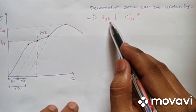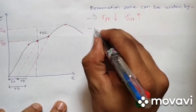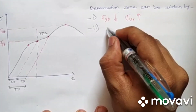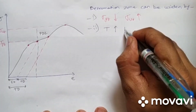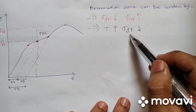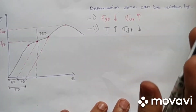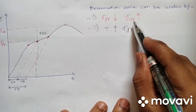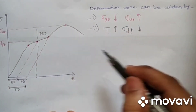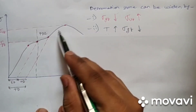Temperature helps reduce yield strength in most materials — with increasing temperature, yield strength reduces. The ultimate strength also reduces, but the reduction in ultimate strength is less than the reduction in yield strength. This difference widens the plastic deformation zone, which is why temperature is used in forming processes.